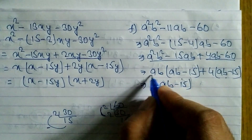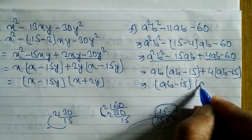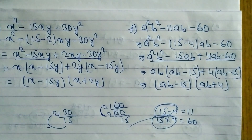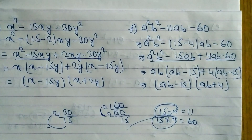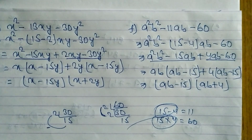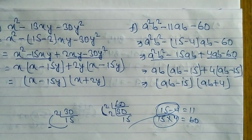So the final answer is (ab - 15)(ab + 4). Hope you understand today's video on factorization. Please follow us on TikTok, subscribe to the channel, and hit the bell button for notifications on upcoming videos. Like and share with your friends — thank you so much, keep supporting, have a great day!